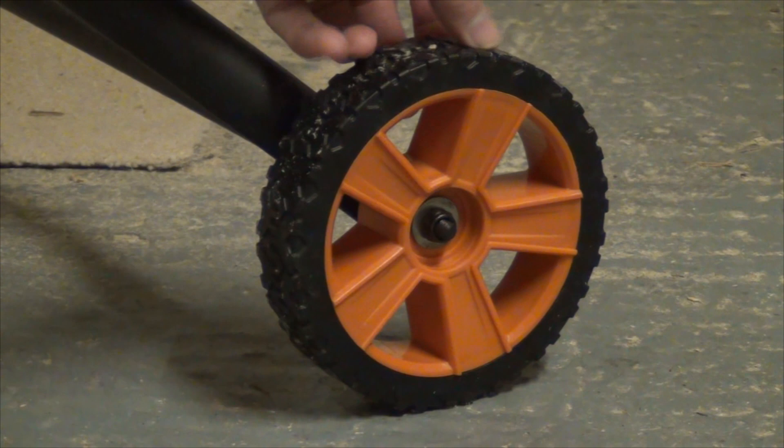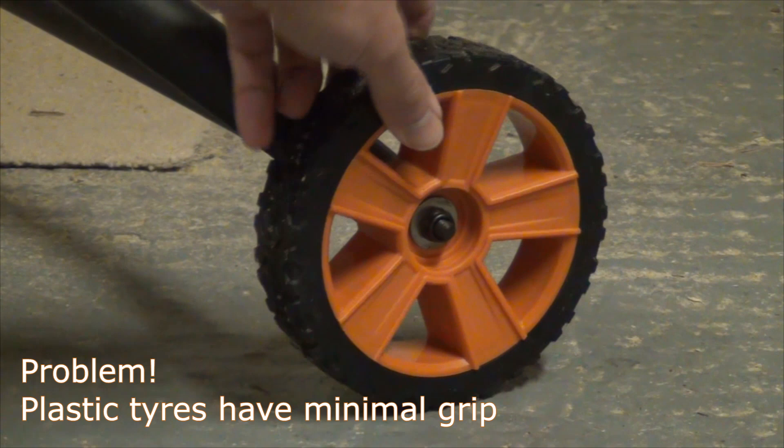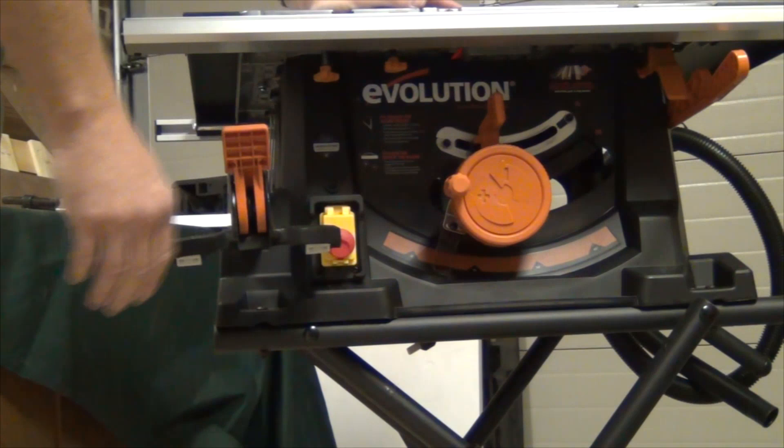The wheels are a slight letdown in that what looks like a tyre there is actually made out of hard plastic, so it isn't particularly grippy. That would be much better if it was done in rubber.